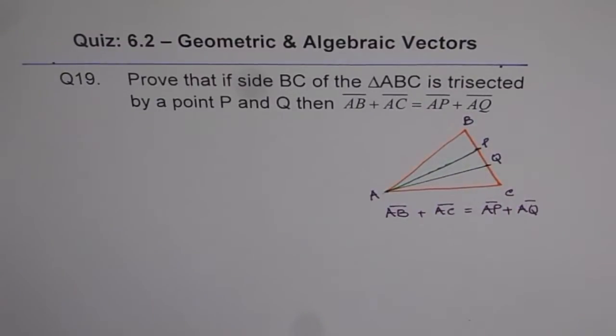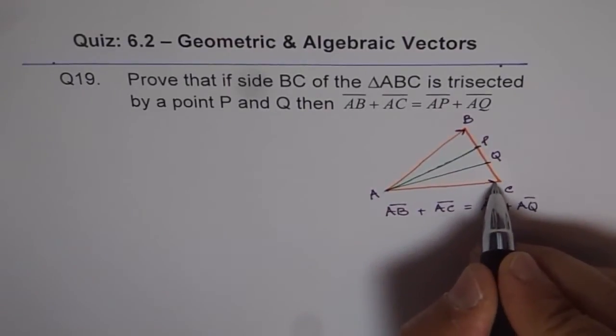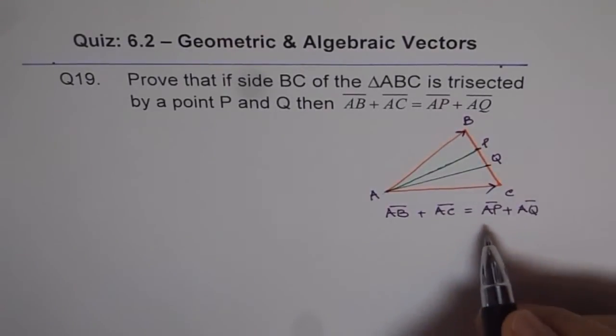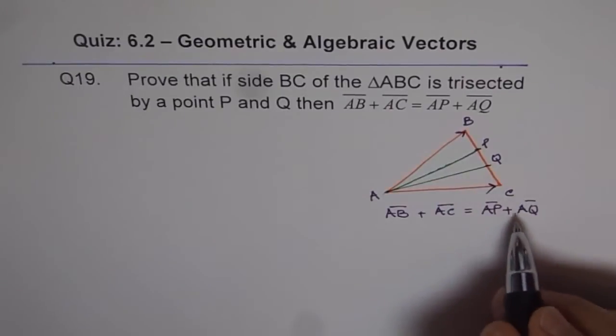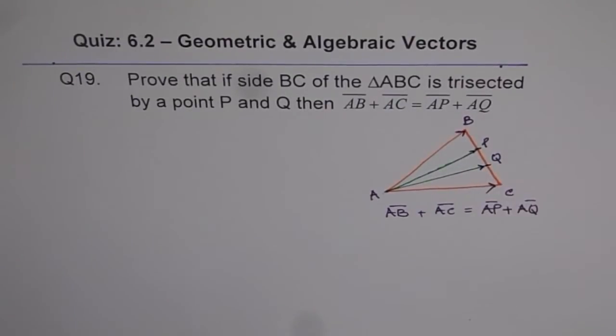Now AB is like this, right. AC is this. And we are saying AP, okay, AP and AQ correct. So this is the diagram which represents the situation.